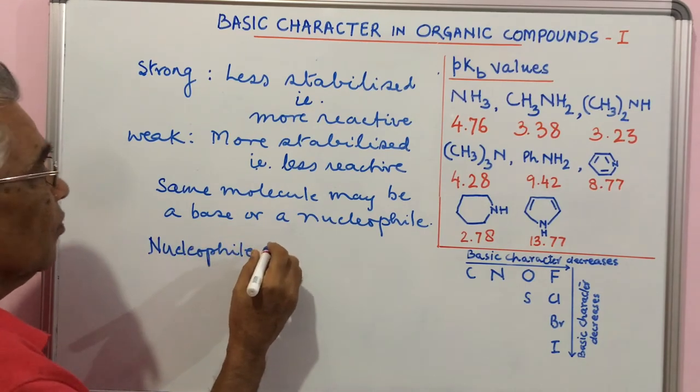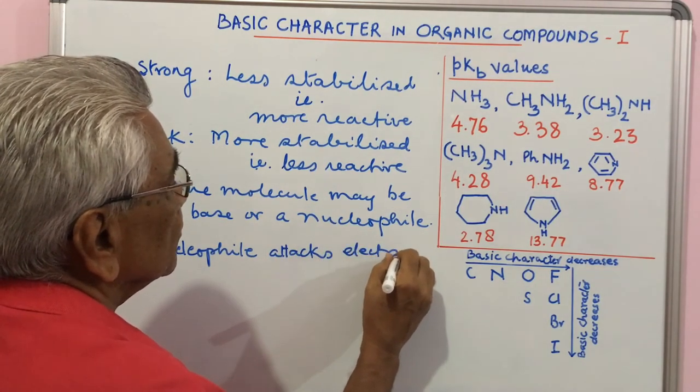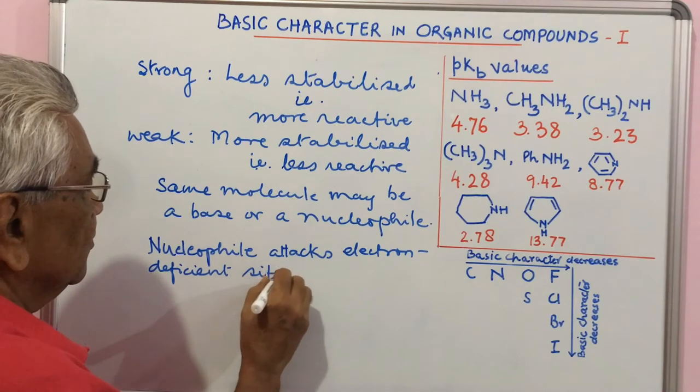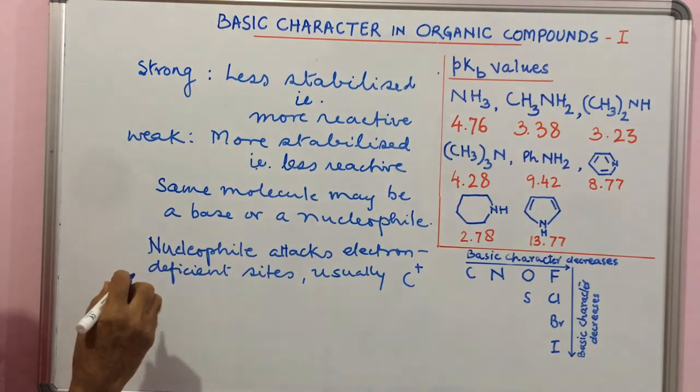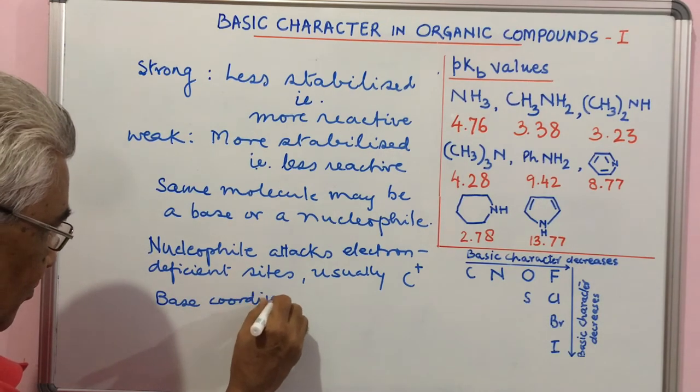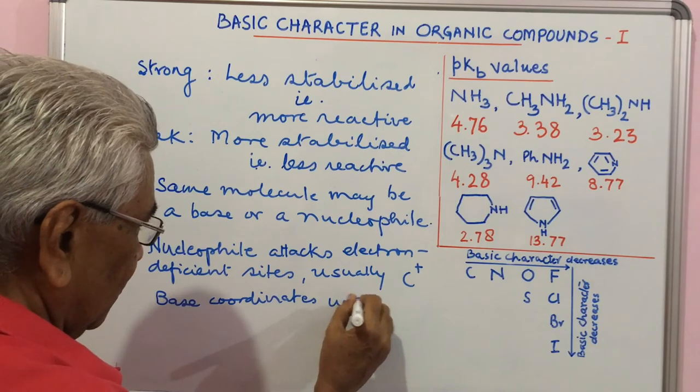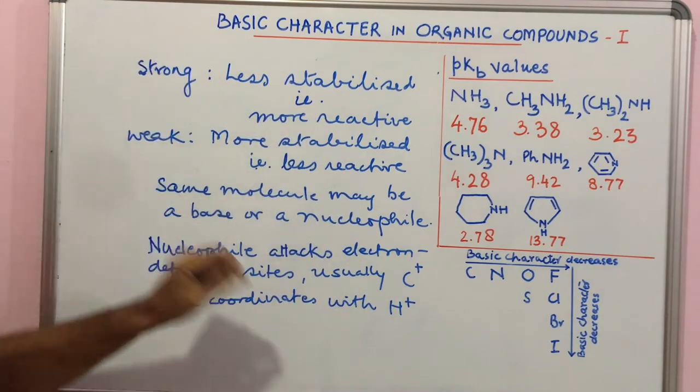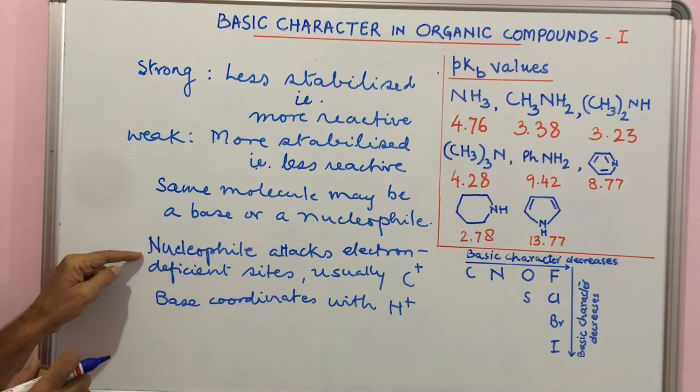Same ion or molecule is a base or a nucleophile, depending upon how it behaves. Nucleophile attacks electron deficient sites, usually C+, whereas base coordinates with proton. When this is going to combine with H+, it will behave as base. When it is combining with C+, this will behave as nucleophile. This is the difference between the two.